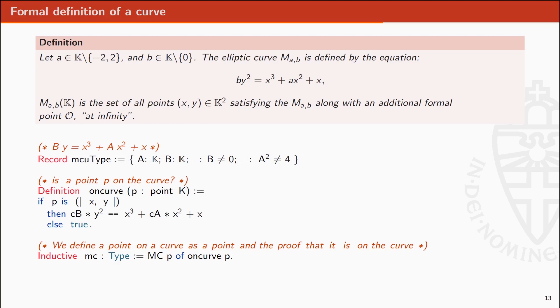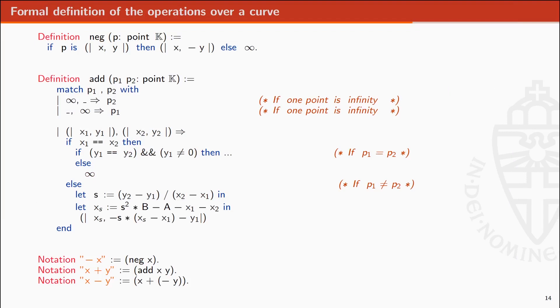Points on elliptic curves must satisfy the curve equation B times Y square equals X cube plus AX square plus X. With this equation, we define the type points on the curve MAB.